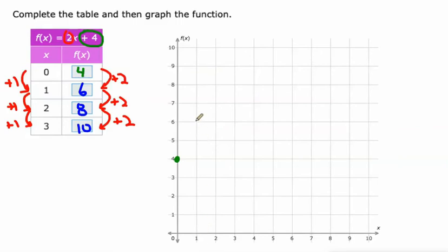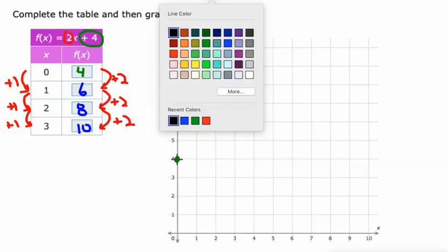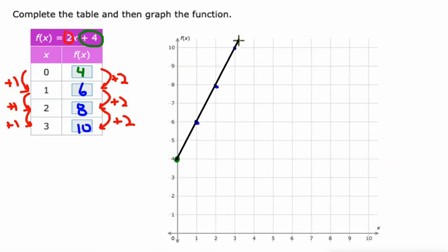So, 1, 6. And that would be enough to get our line. But what you will notice is that all the other points, 2, 8, and 3, 10, will also fall in the line when IXL graphs it. So, it'll look like that.